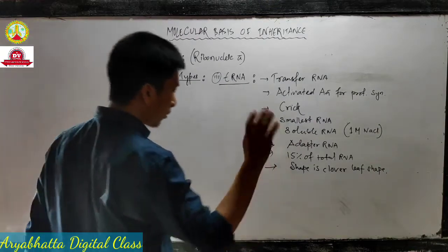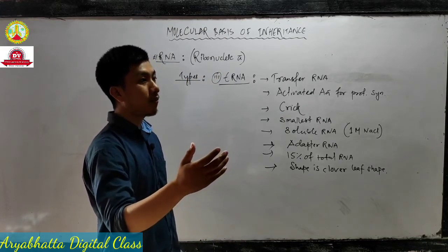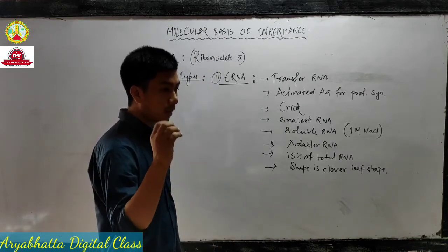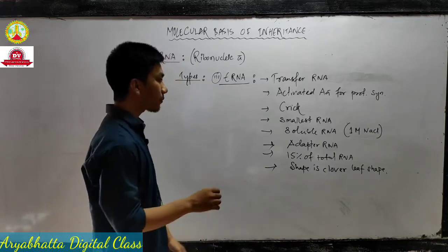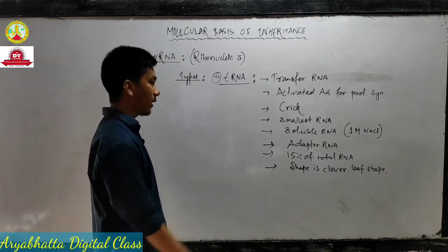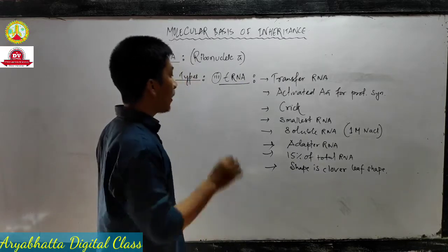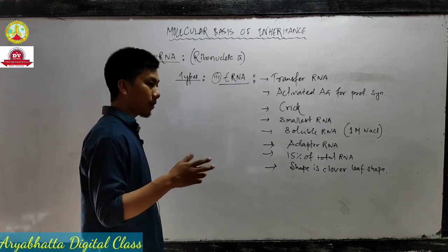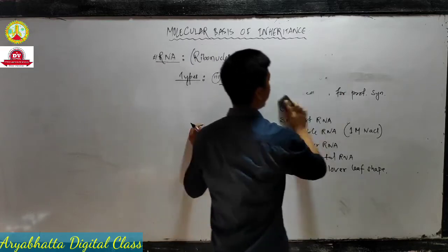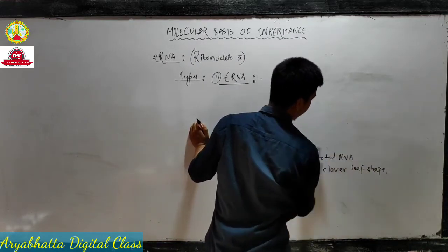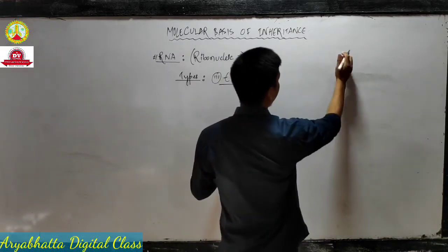These are the important features of tRNA - this may come for a 2 or 3 mark question. It stands for transfer RNA, it transfers activated amino acids for protein synthesis, it was first discovered by Crick, it is the smallest RNA, also called soluble RNA because it dissolves in one molar solution of sodium chloride, also called adapter RNA, and the shape is clover leaf shape.